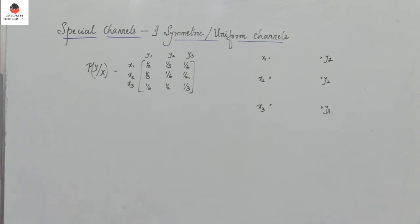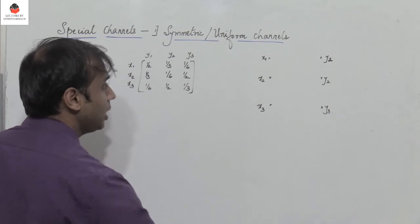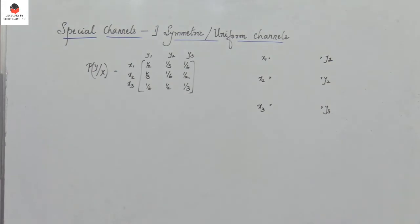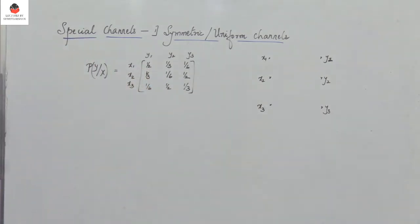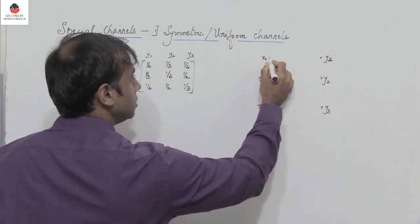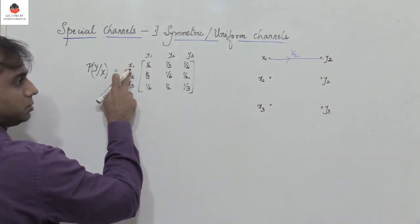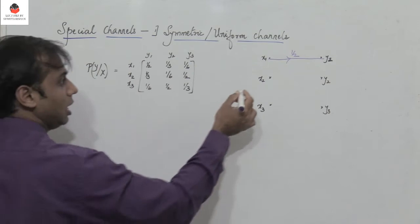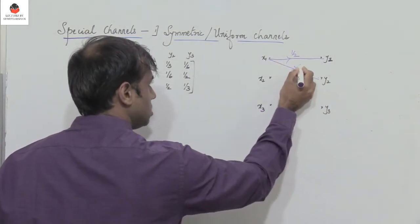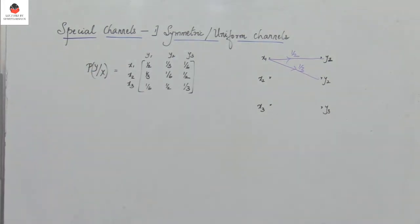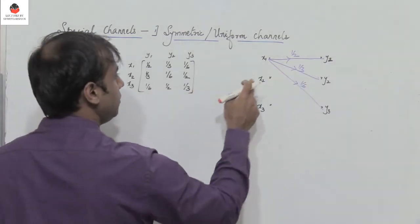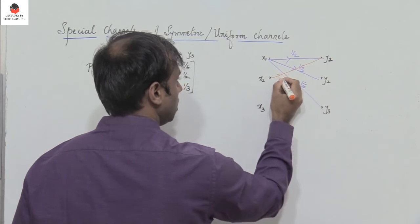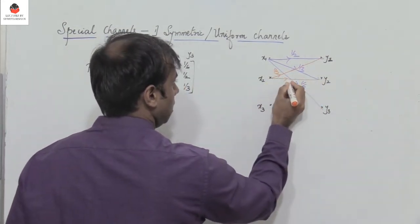Now how do we draw the diagram? Consider inputs x1, x2, x3 and outputs y1, y2, y3. From x1, the probability of receiving y1 is 1/2, the probability of receiving y2 given x1 is 1/3, and the probability of receiving y3 given x1 is 1/6. The probability of receiving y1 given x2 is 1/3, next is 1/6, and then 1/2.